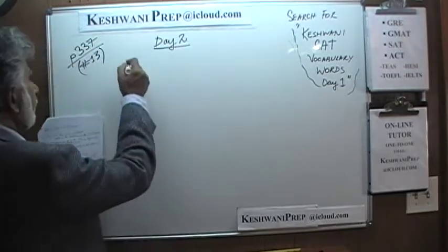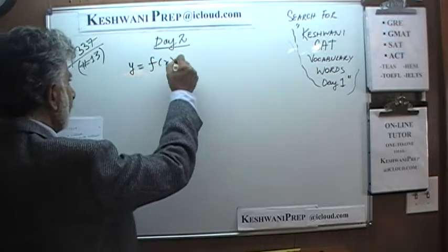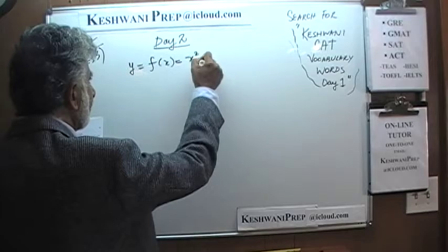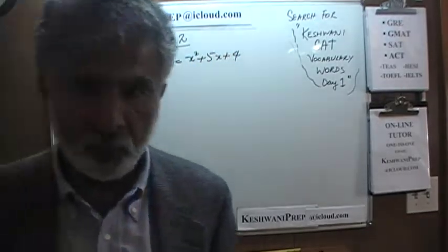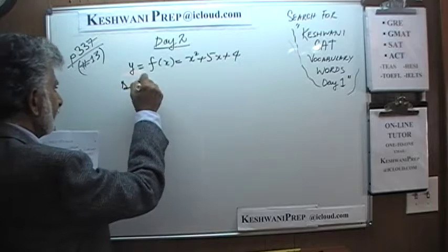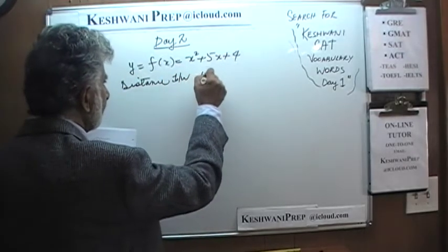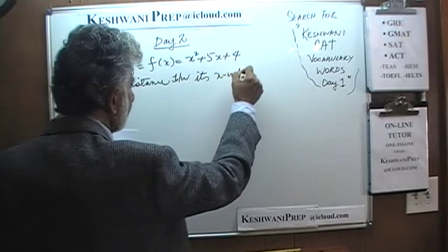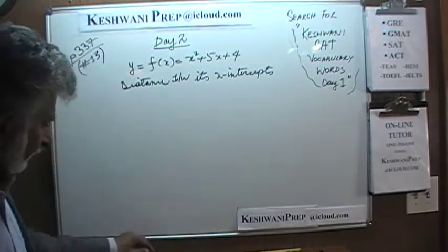Here's the first one. We are given a function: y = f(x) = x² + 5x + 4. As we can clearly see, it's a quadratic equation — hence it's a parabola. And what we are being asked here is to find the distance between its x-intercepts.